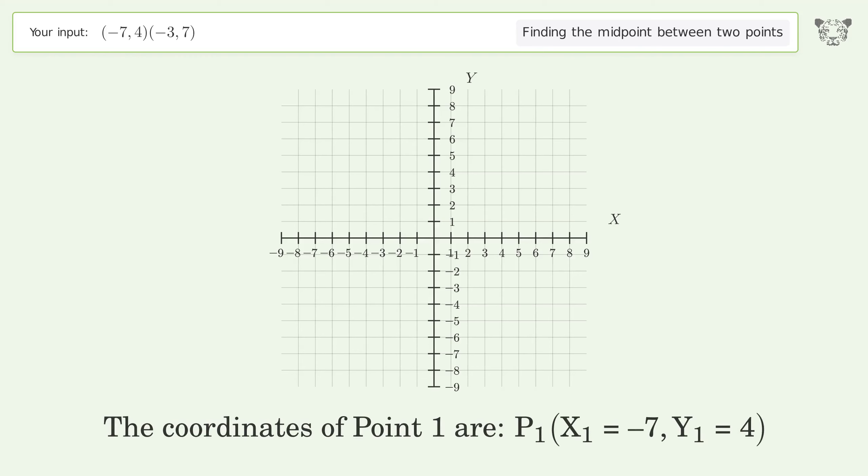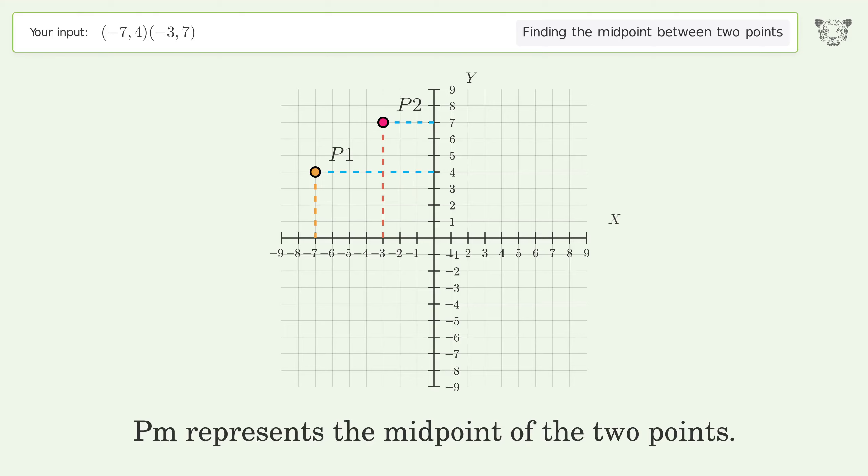The coordinates of Point 1 are x1 = -7, y1 = 4. The coordinates of Point 2 are x2 = -3, y2 = 7. Pm represents the midpoint of the two points.